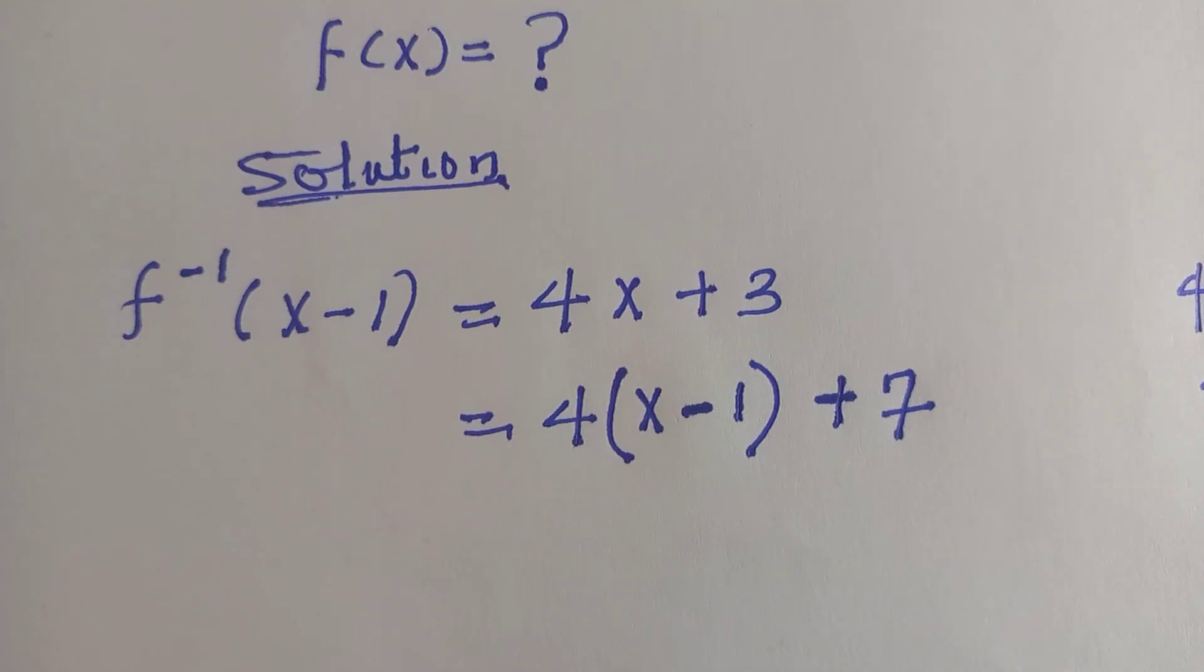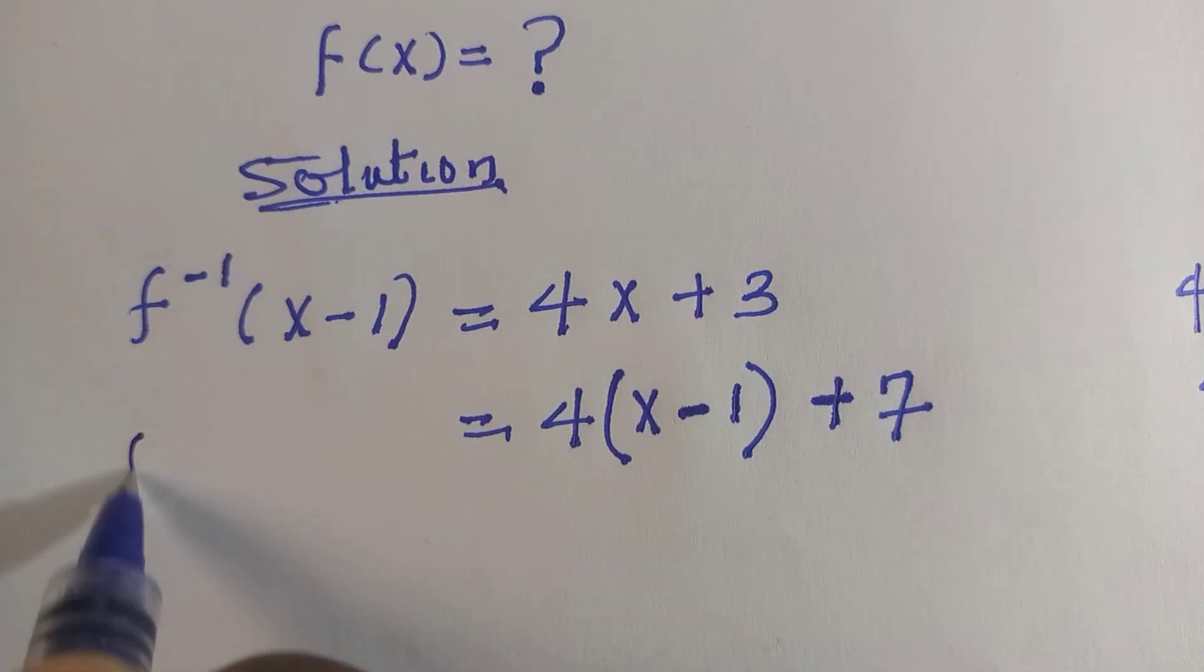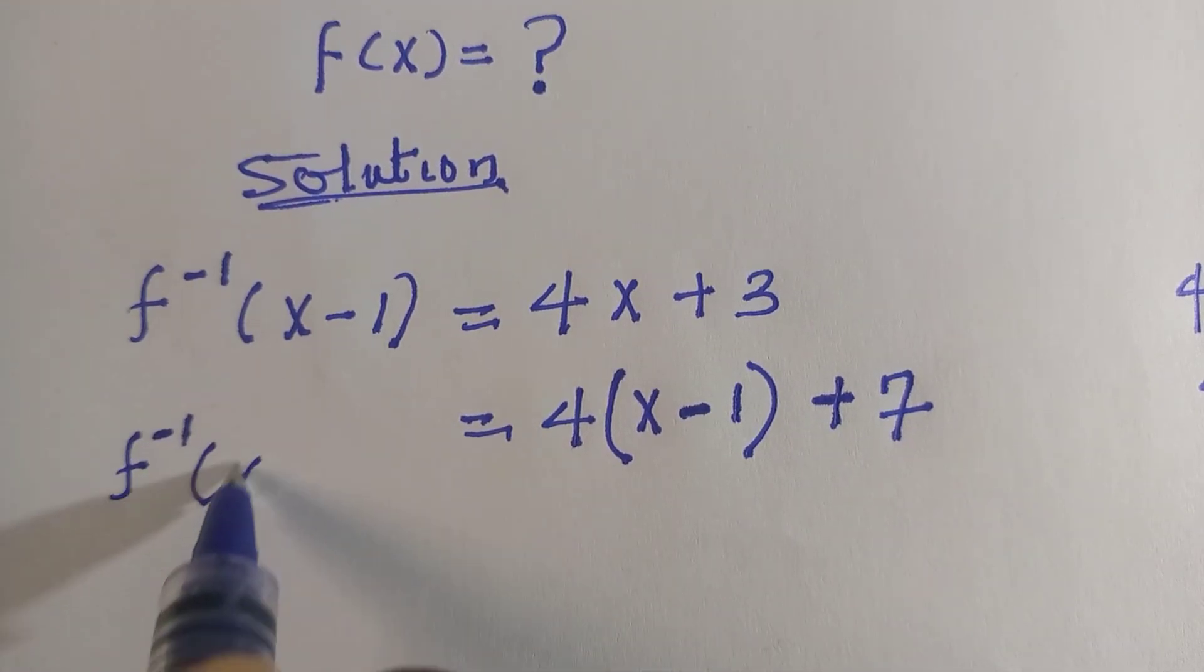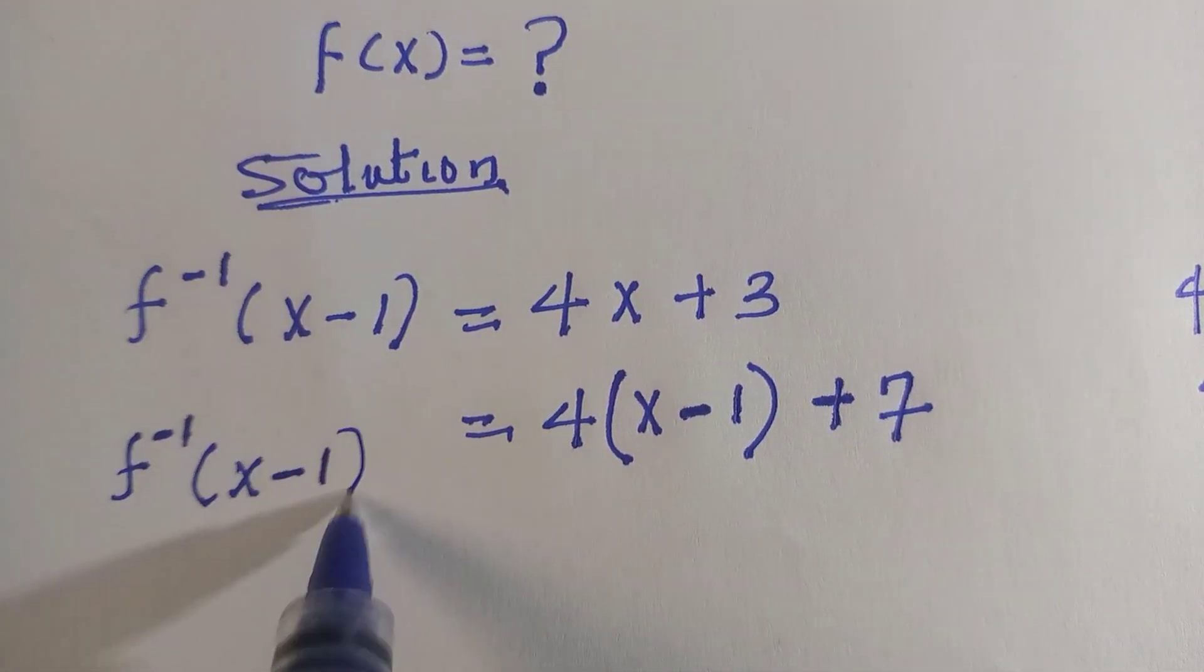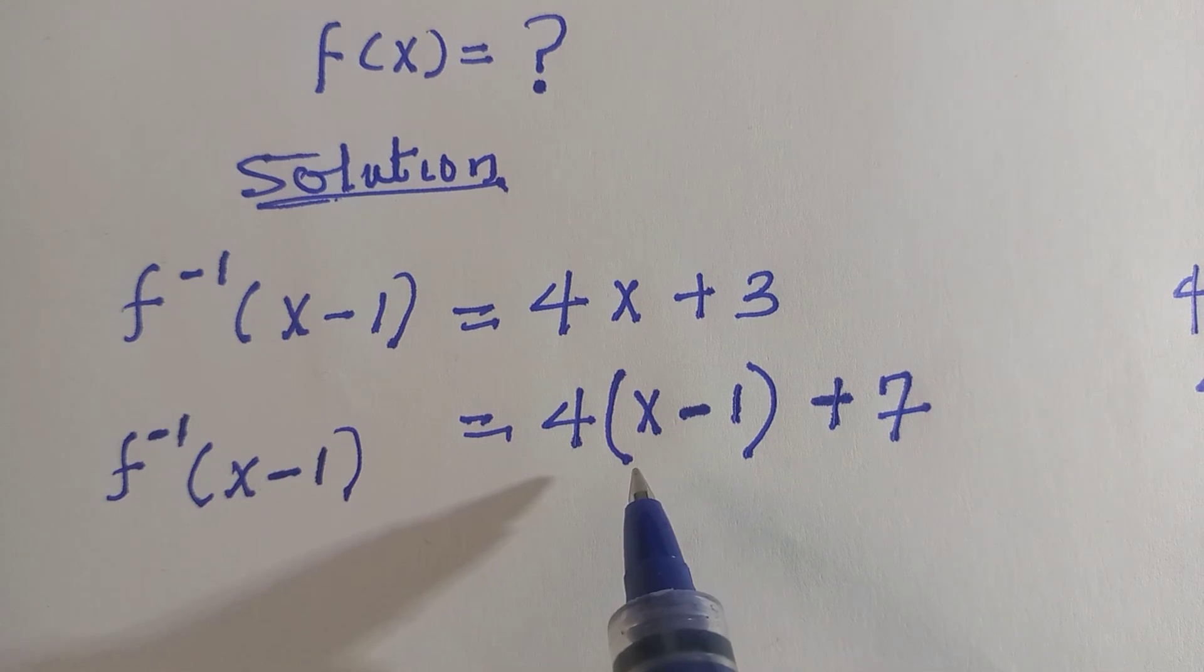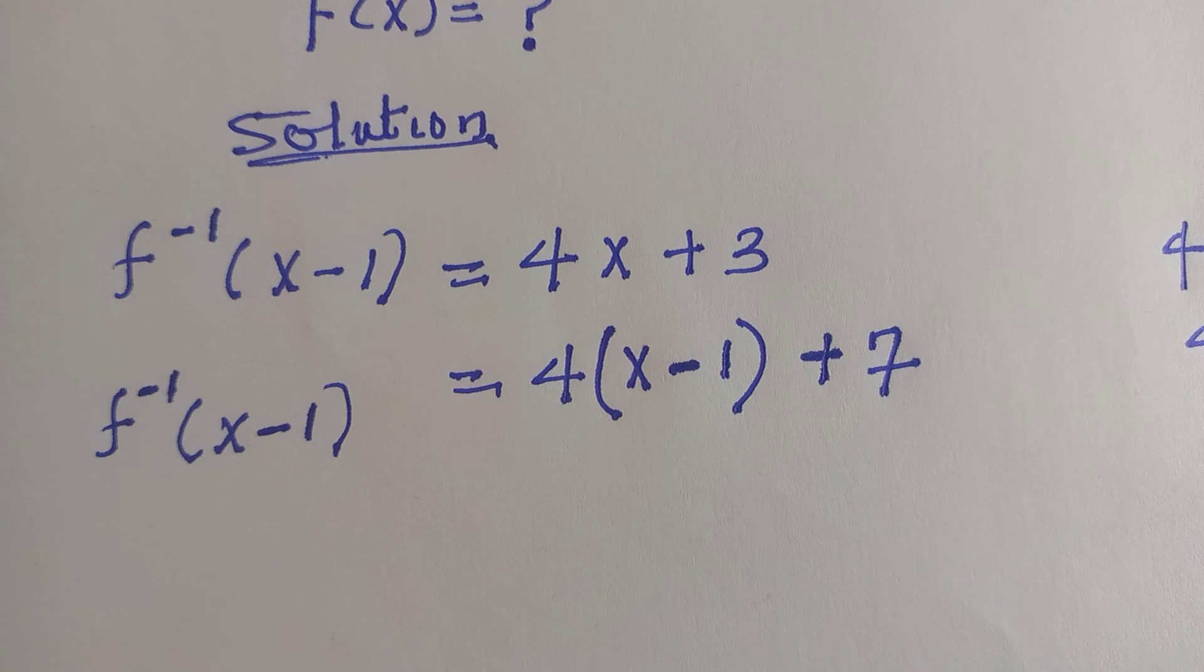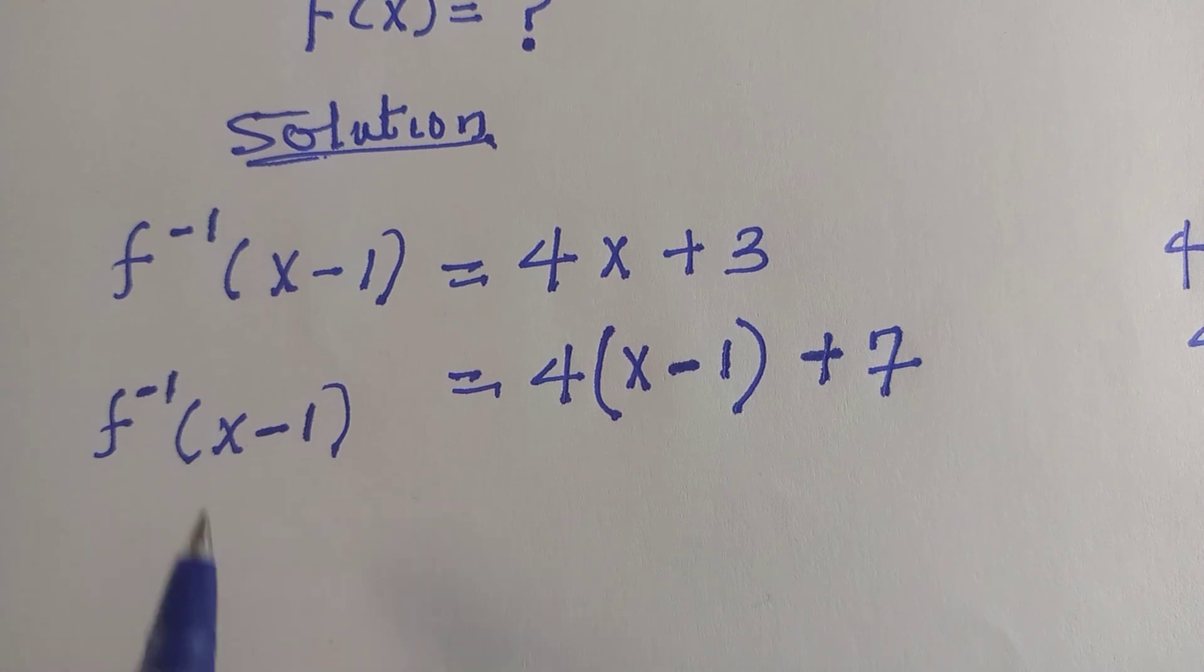And then we are ready to compare these two to be the same, because anything we have in this bracket has assembled the output here. Then, since we are asked to calculate f of x, I can confidently change this x minus 1 to x.